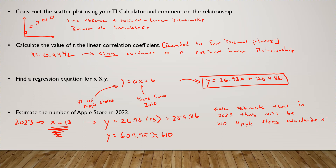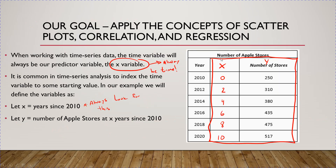We estimate that in 2023, there will be 610 Apple stores worldwide. It's the same type of analysis as the previous lectures — you just have to make sure whatever the X value is, whatever it tells you to index to, take your year and change it accordingly.